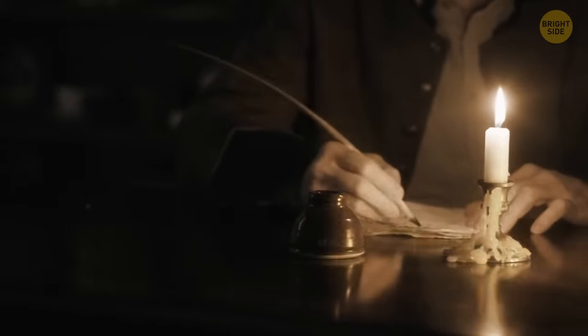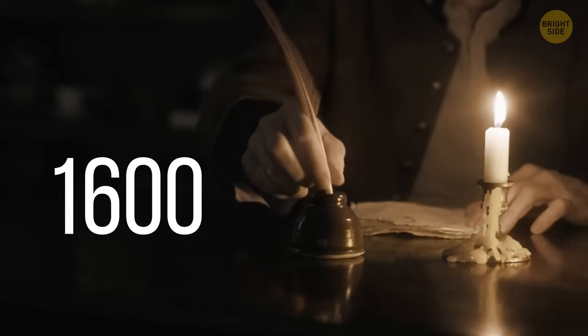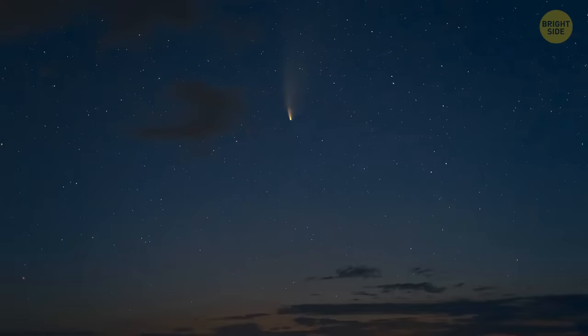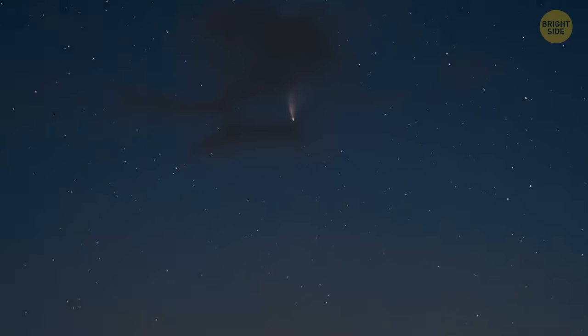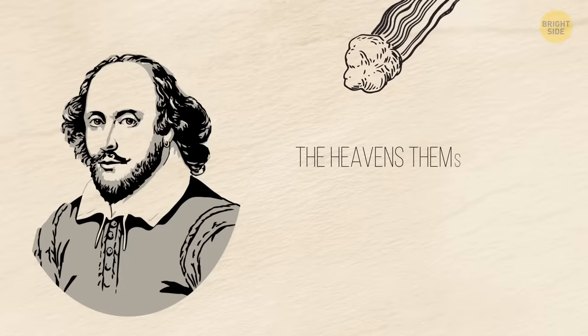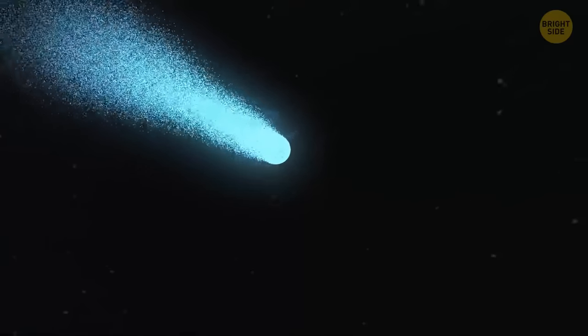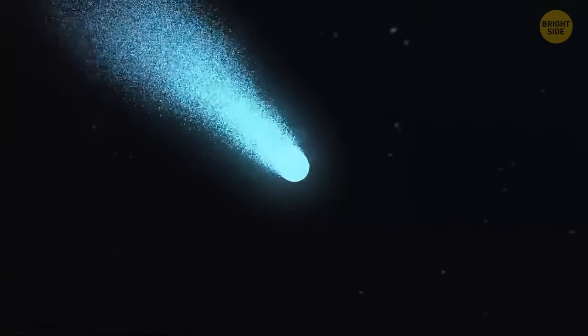Shakespeare himself seems to have written about this comet in his play Julius Caesar, around the year 1600. In this work, he included a now-famous phrase speaking of comets as unusual signs, saying, The heavens themselves blaze forth. It wasn't the last time famous writers felt a certain connection with this object.